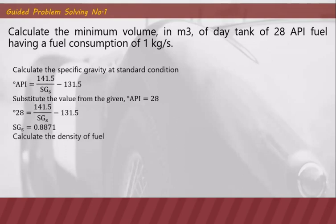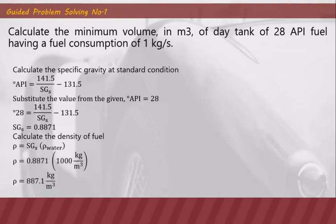Next, we calculate the density of the fuel by multiplying the SGS by the density of water per meter cube. That gives us a fuel density of 887.1 kilograms per meter cube.